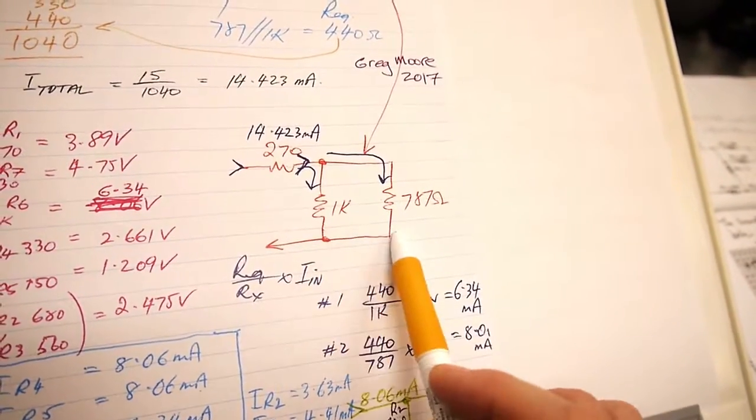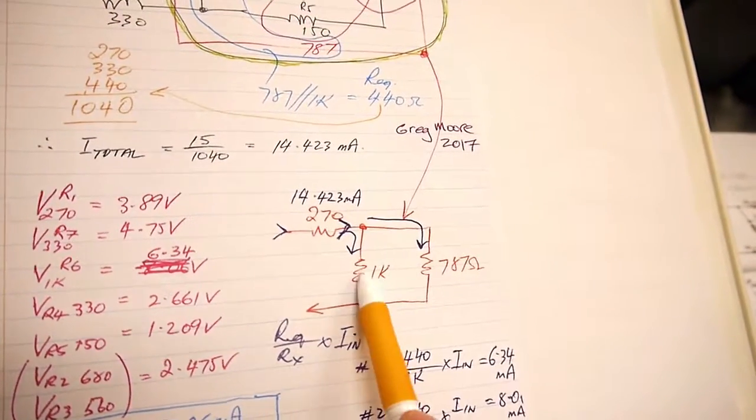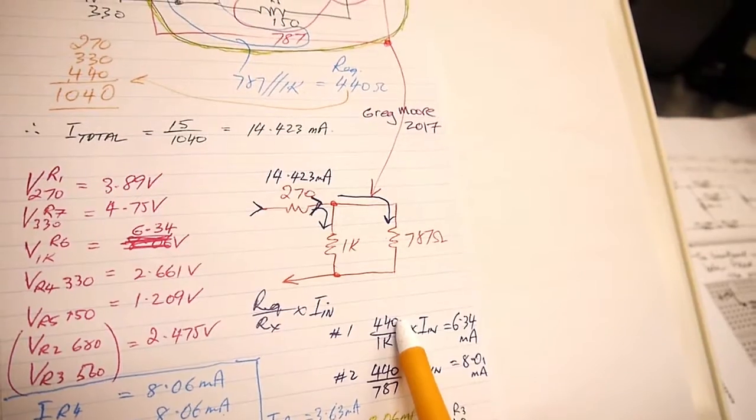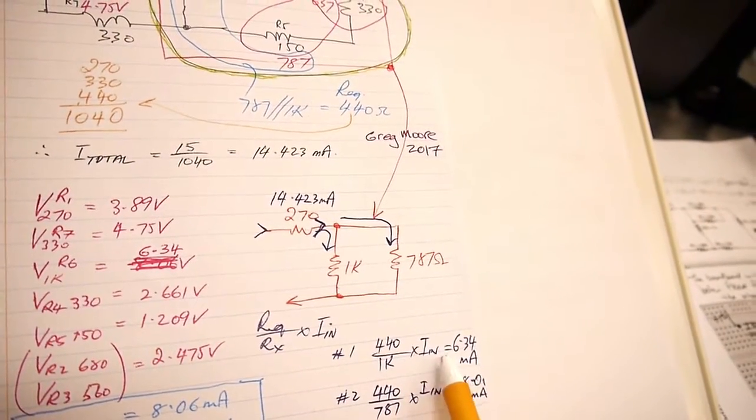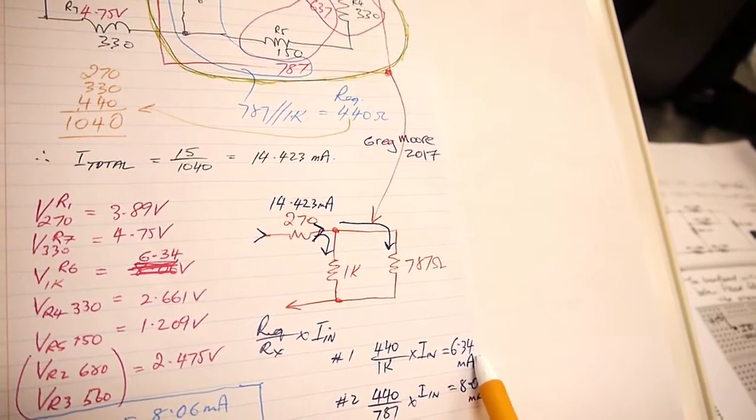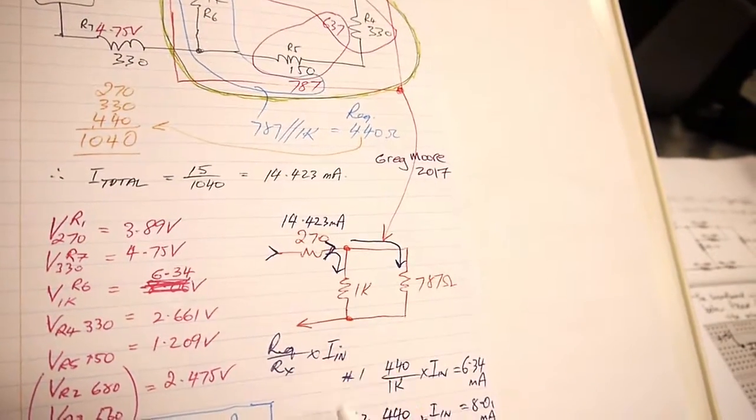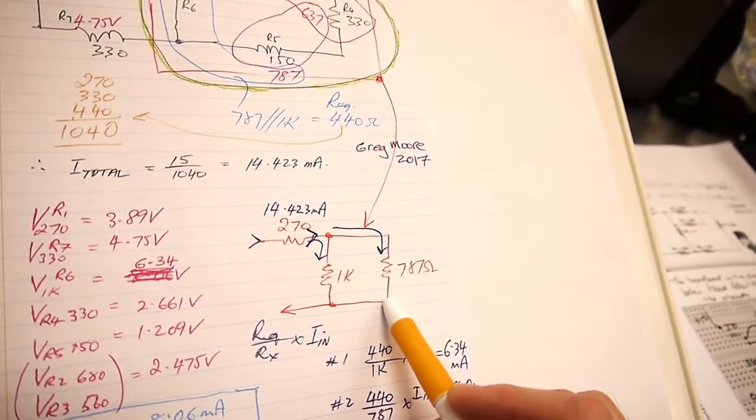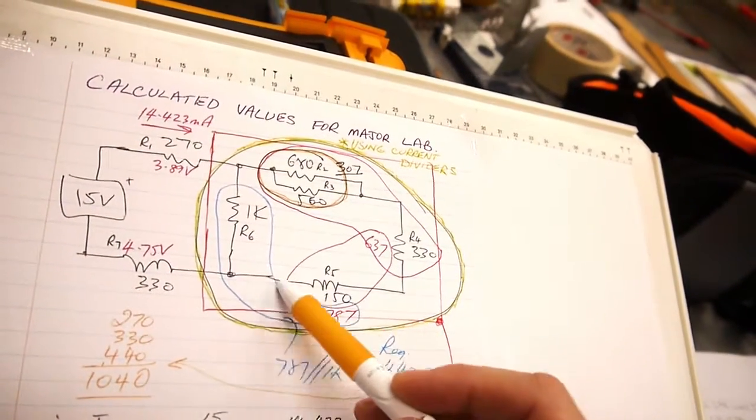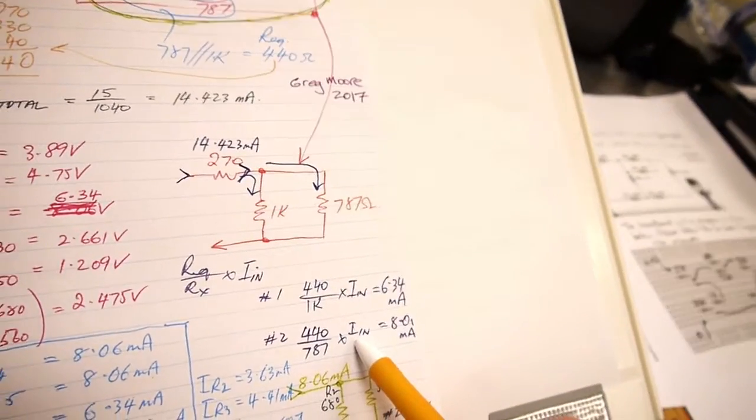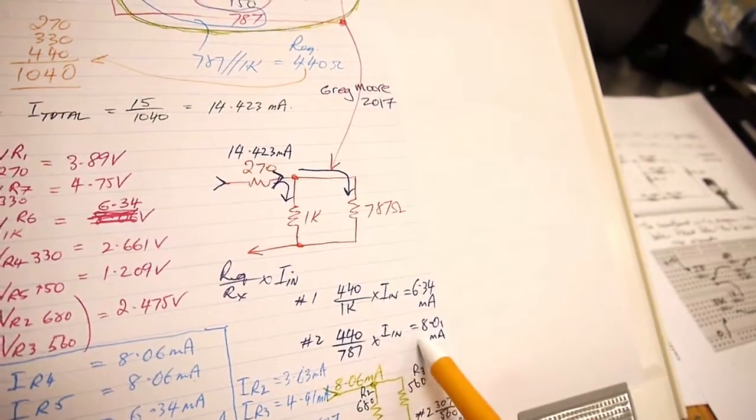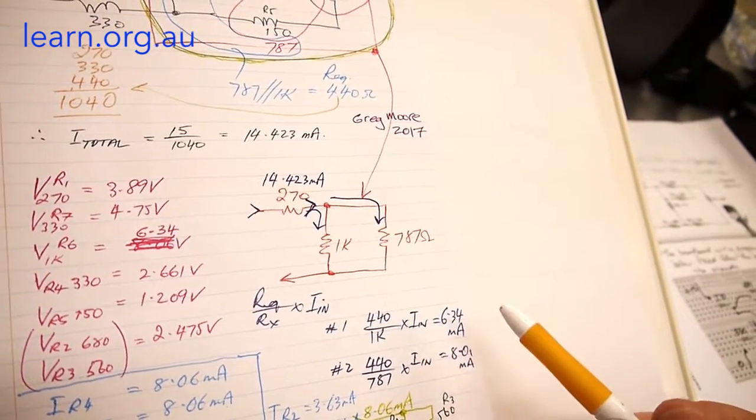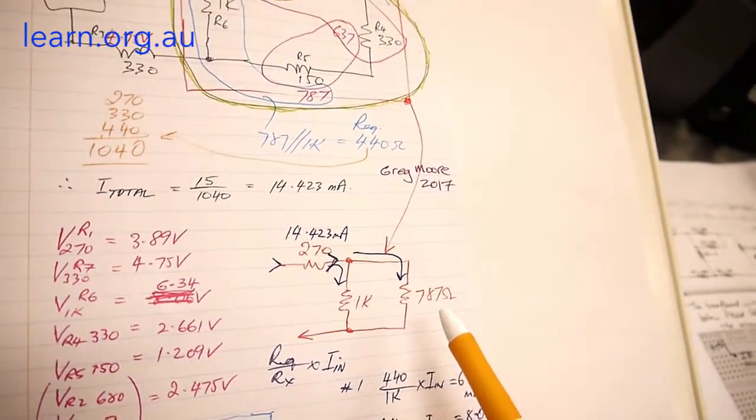Which is REQ divided by RX times the node current in. We've got the 14.423 milliamps coming in through the 270 ohm resistor. Case 1: 440 ohms REQ divided by 1k times the node current in gives me 6.34 milliamps traveling down through the 1k branch. Case 2: 440 divided by the 787 ohms times 14.423 milliamps gives me 8.06 milliamps.